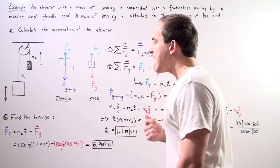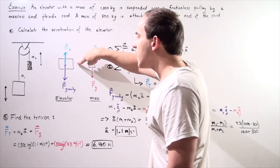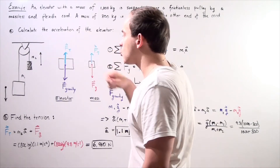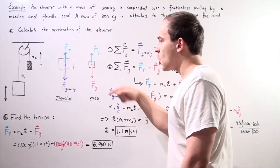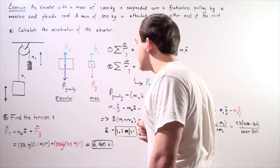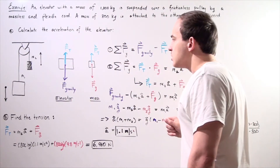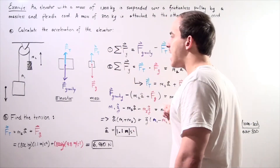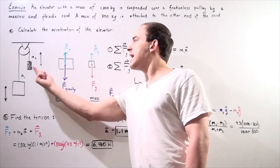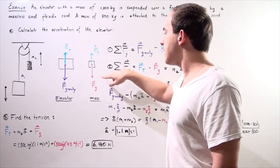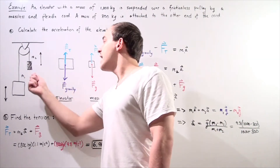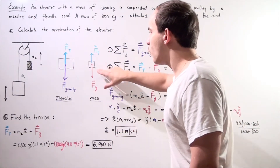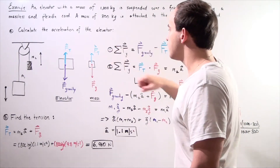For the elevator moving downward, we choose the downward direction as positive. For object number two moving upward, we choose the upward direction as positive — the positive direction is the direction of motion for each object. For the elevator, gravity points downward (positive) and tension resists the motion (negative). For object two, tension points upward (positive) and gravity pulls it downward (negative).